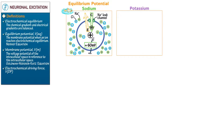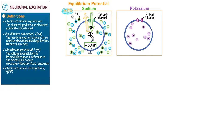Draw another cell membrane and include a potassium leak channel — these are abundant along neuronal membranes. Show that unlike sodium, there's a much greater concentration of potassium ions inside of the cell than outside, a ratio of roughly 35 to 1.